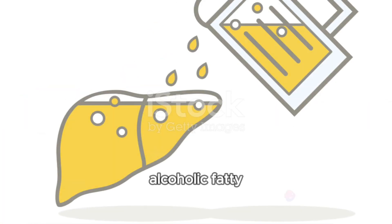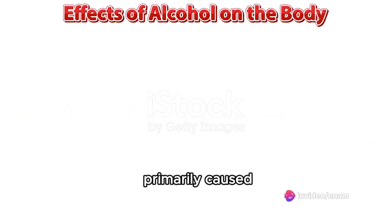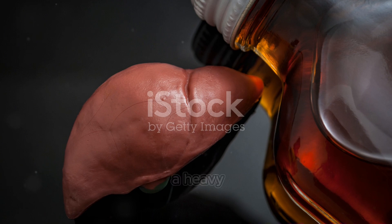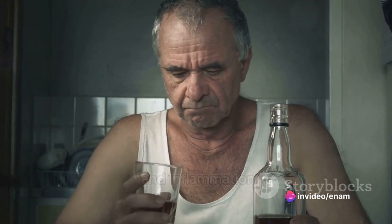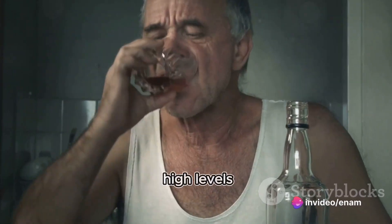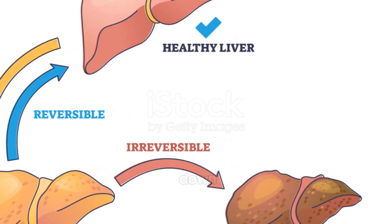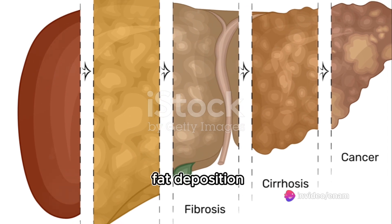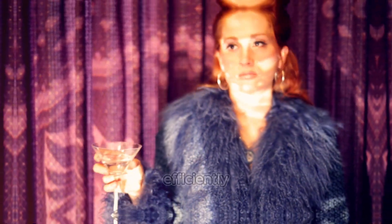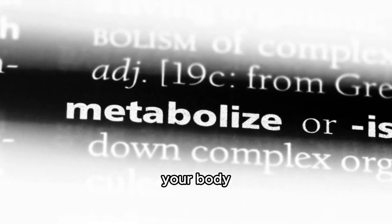While NAFLD occurs without heavy alcohol consumption, alcoholic fatty liver disease, or AFLD, is a different story. AFLD is primarily caused by excessive alcohol intake. You might think you're not a heavy drinker, so you're safe — but not necessarily. Chronic alcohol abuse can lead to liver fat accumulation and inflammation, even if you consume moderate to high levels of alcohol. When you drink, your liver gets to work breaking it down. This metabolic process produces toxic byproducts that can damage liver cells and promote fat deposition. The more you drink, the more these toxins build up, overwhelming your liver's ability to metabolize alcohol efficiently, leading to AFLD.